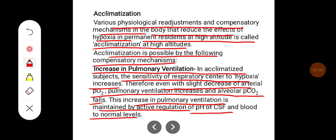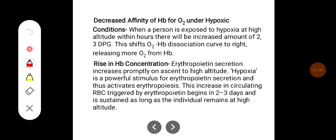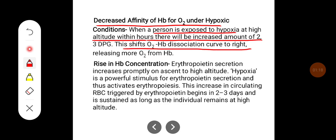This increase in pulmonary ventilation is maintained by active regulation of pH of CSF and blood to normal levels. Second, decrease in affinity of hemoglobin for oxygen. Under hypoxic conditions, when a person is exposed to hypoxia at high altitude, there will be an increase in the amount of 2,3-DPG. This shifts the oxygen dissociation curve to the right, releasing more oxygen from hemoglobin.